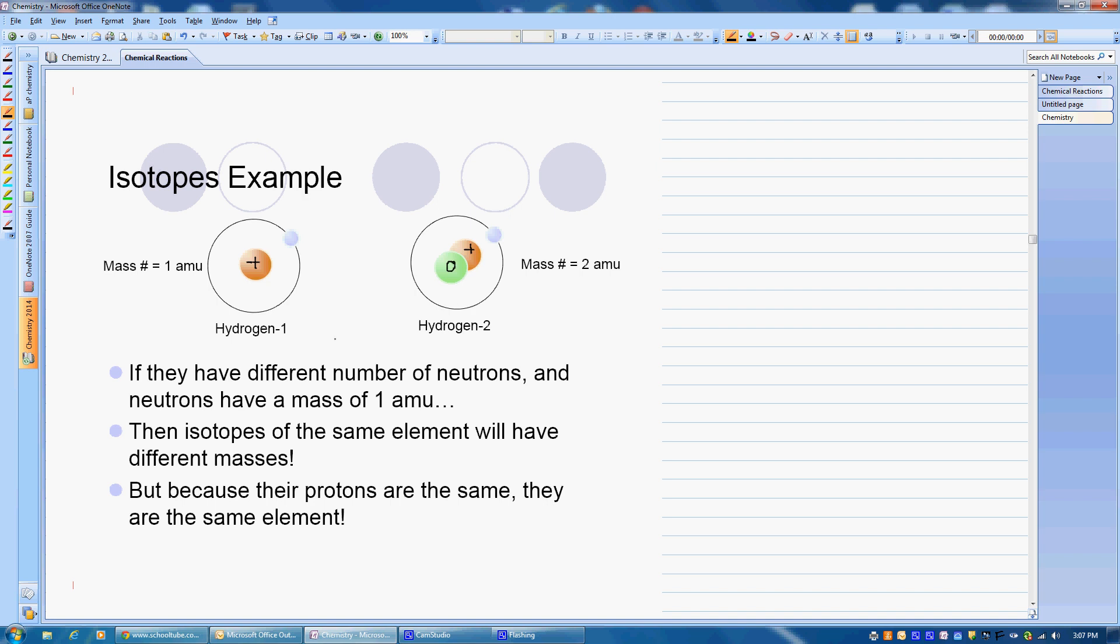Here we've got a proton and a neutron. So again, hydrogen written with the mass after it. This is another way to write it. Or we can write it like this. So hydrogen with a mass of 2 can be written either way. Again, this bottom number is that atomic number.